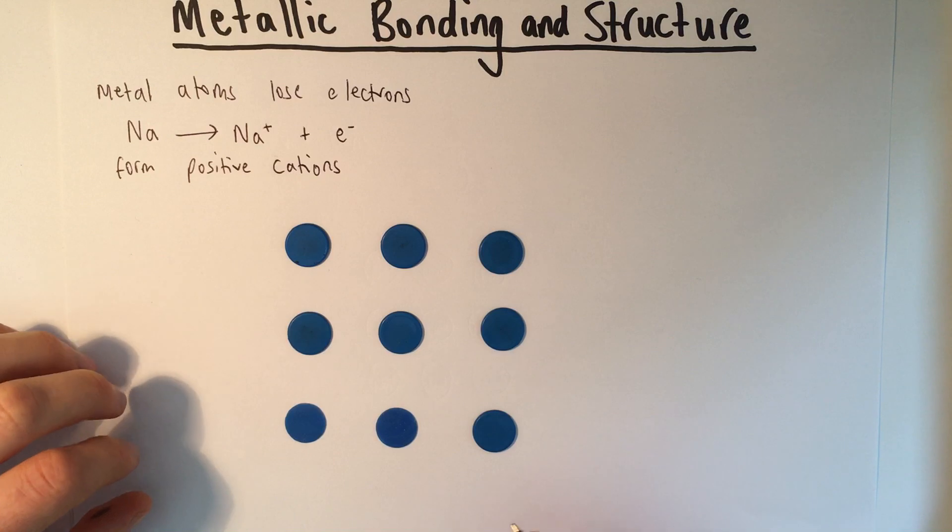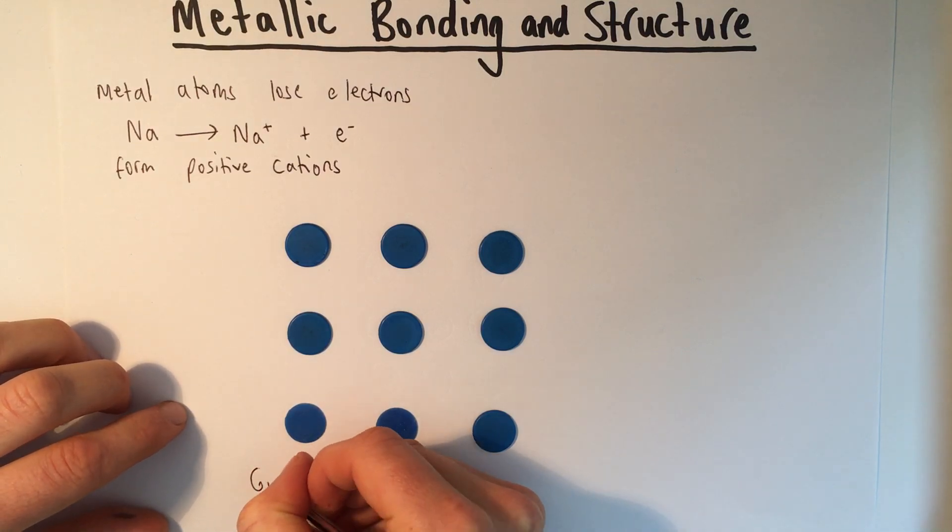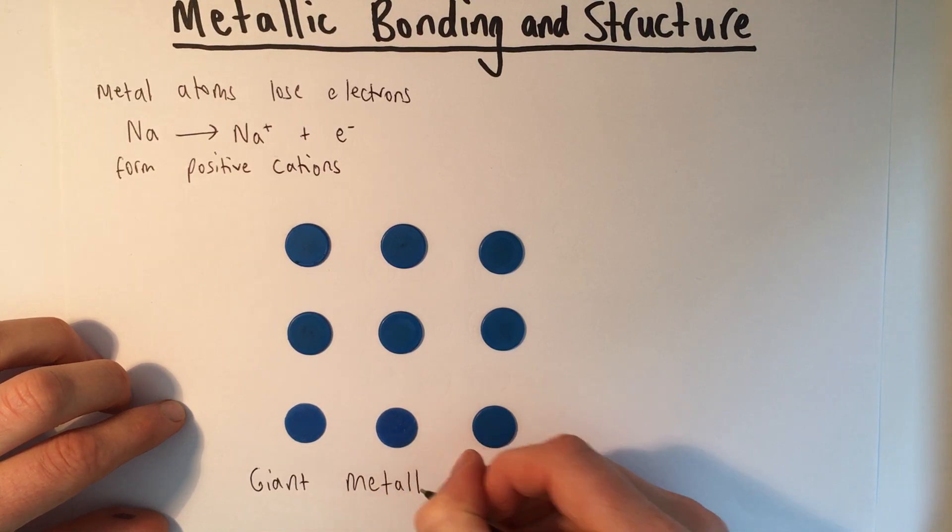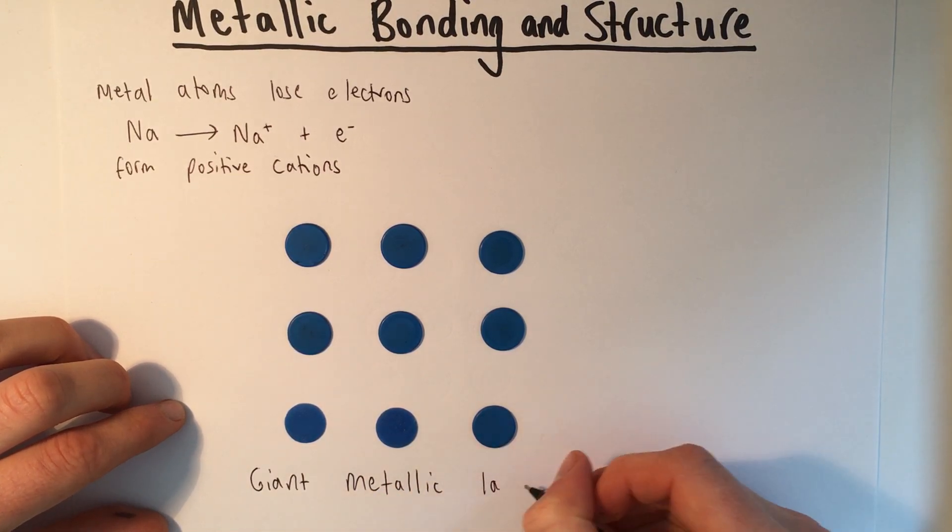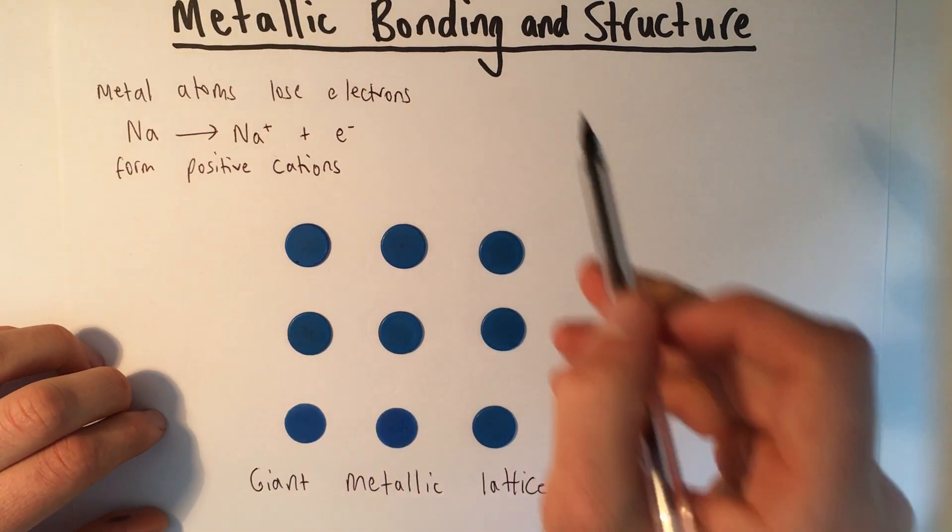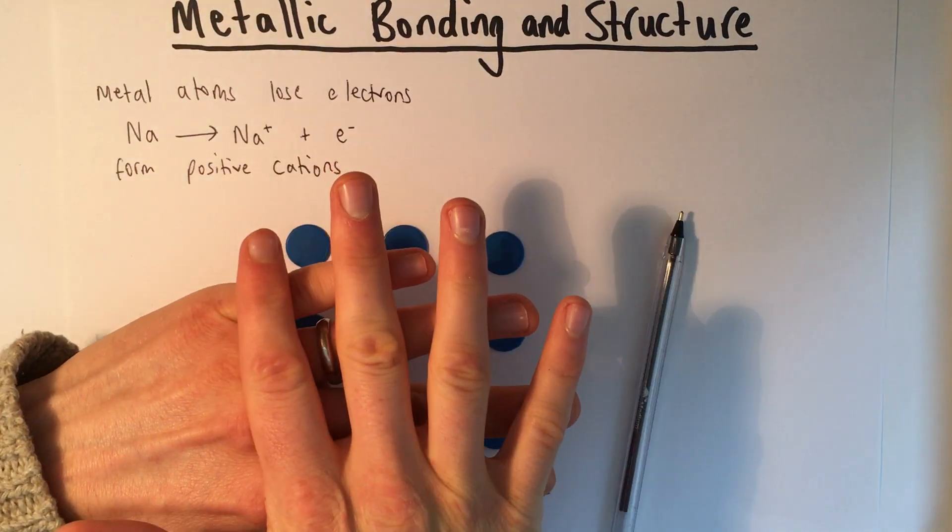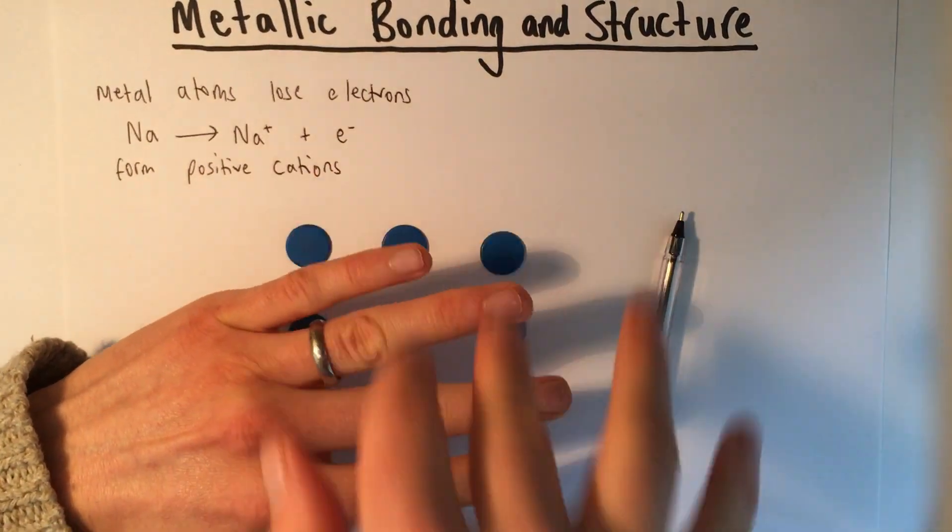So that's why we call this kind of structure a giant metallic lattice. Giant because it's so big. There are billions of ions in all the different directions. And the lattice describes this pattern of rows and columns.